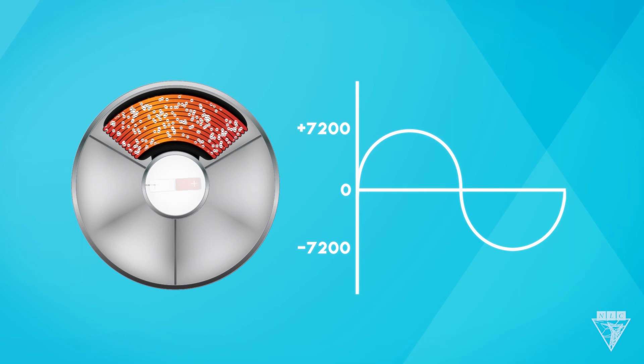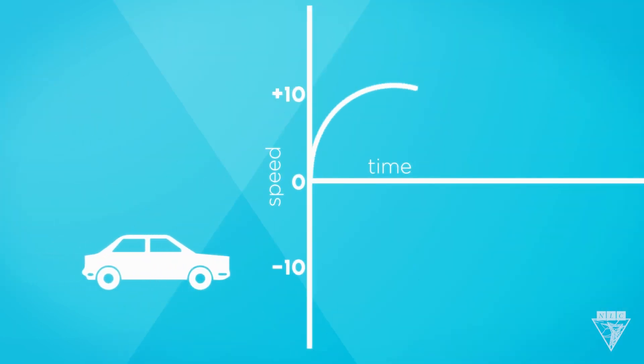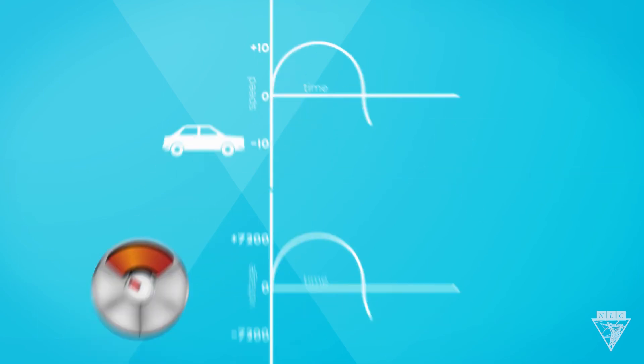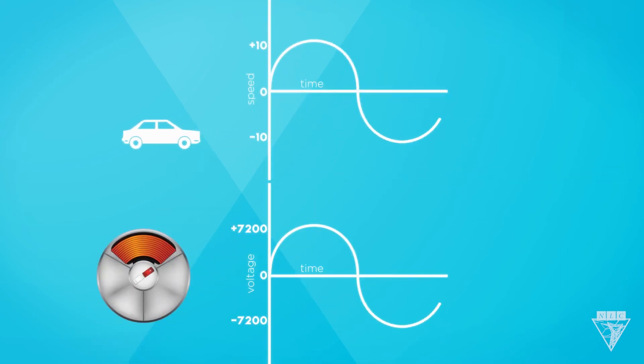And now the coil is back to where it started, and we have zero volts. So, similar to the car's changes in speed and direction, the changes in voltage have made the shape of a sine wave.